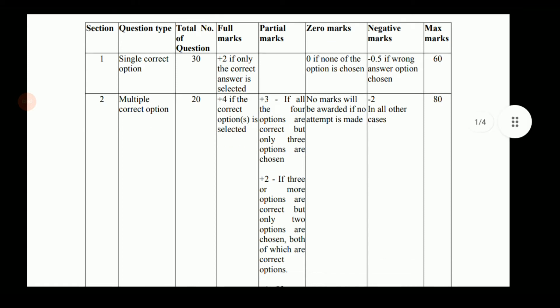There will be 20 questions in which multiple correct answers are possible — more than one option out of four will be correct. The marking scheme: plus four if you have chosen all the correct options. If you have chosen only two or three correct options, partial markings will be done accordingly. There will be negative marking of minus two.